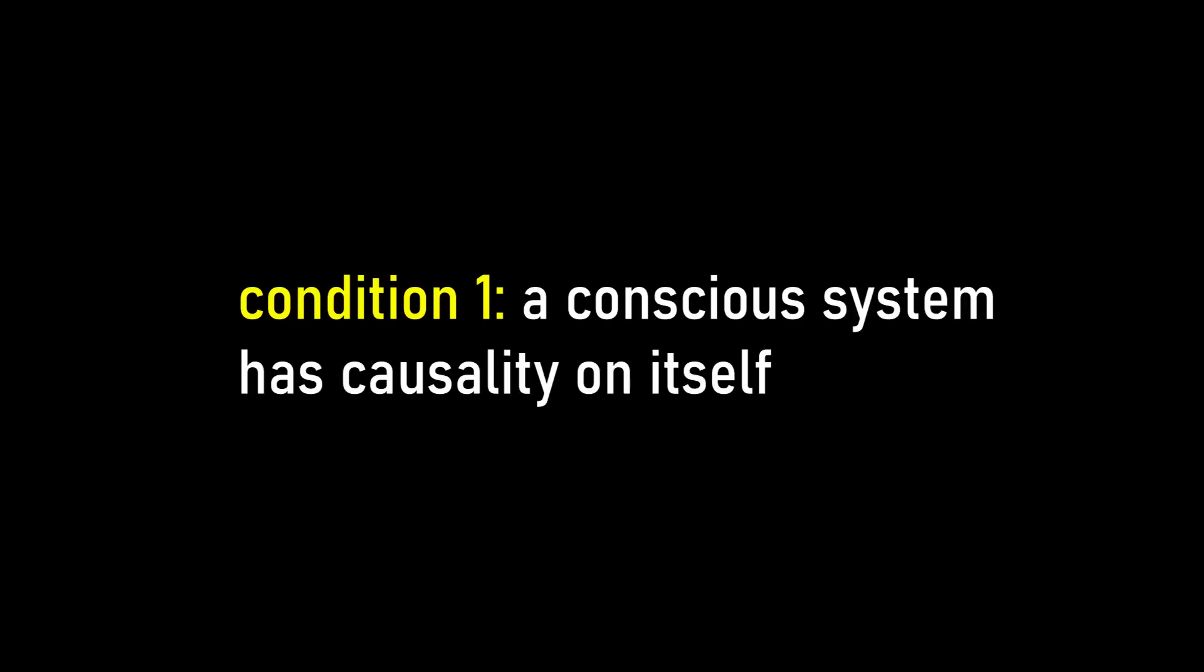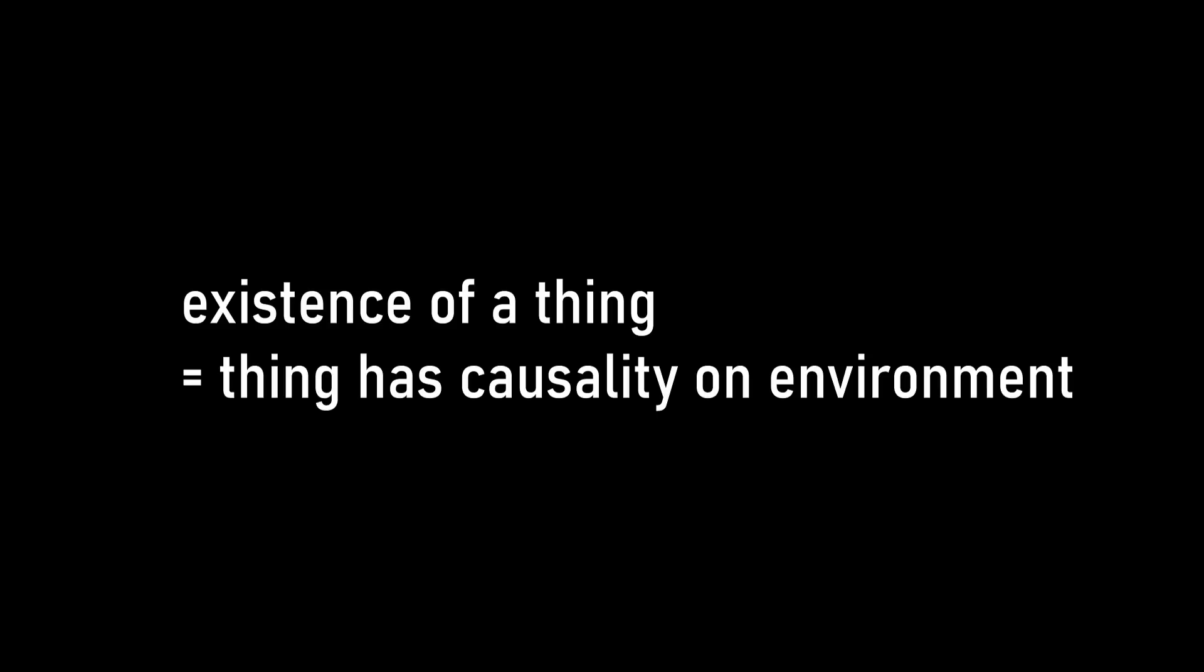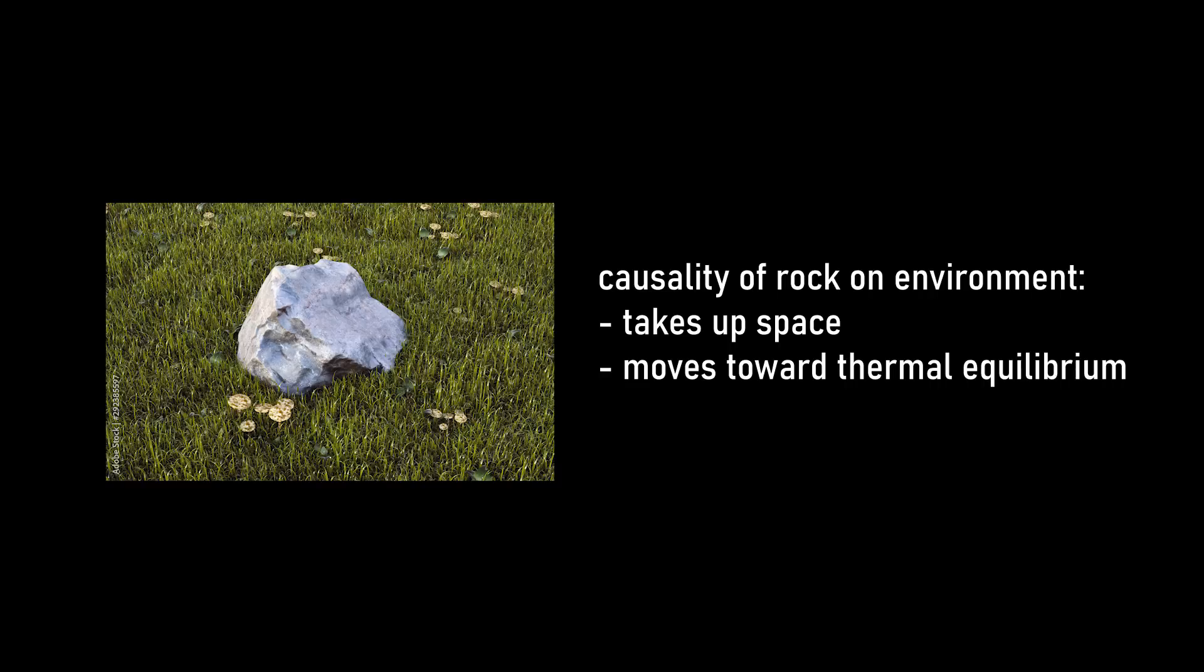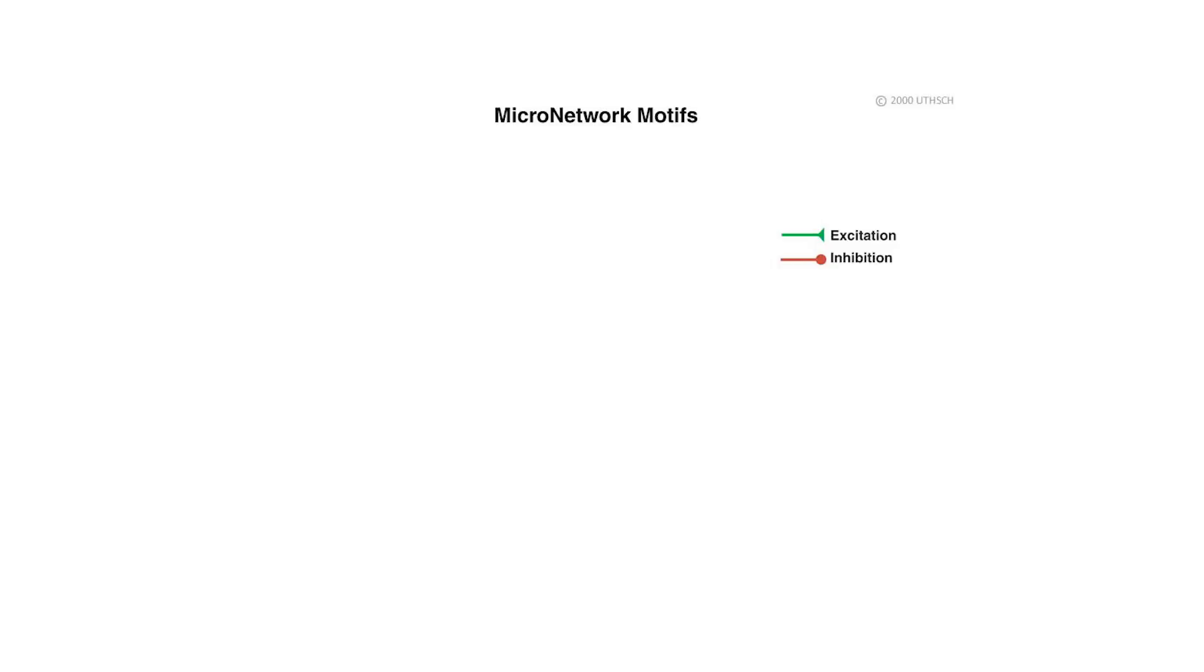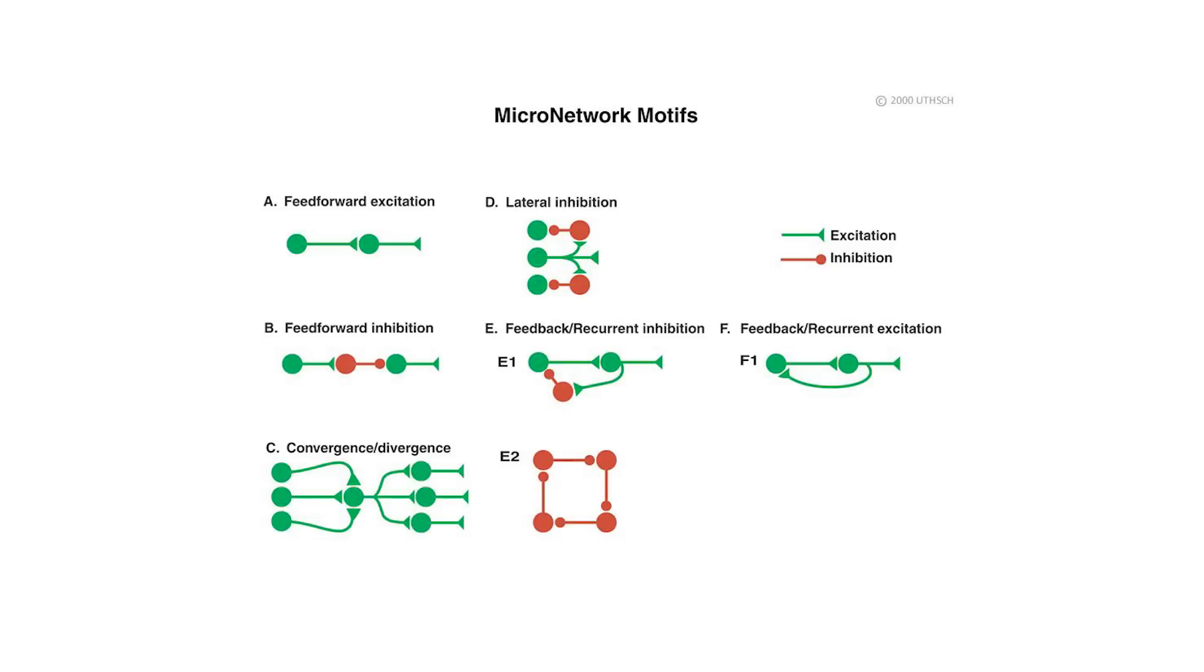Condition number one, a conscious system has causality on itself. This first assumes that the existence of some thing means that the thing has causality on its environment. So, like, the existence of a rock means that it has to take up space in its environment, move towards thermal equilibrium with its environment, have a non-zero gravitational pull, etc. Because part of being conscious is being self-aware, meaning consciousness exists from its own perspective, that means that a conscious system must have causality on itself. For example, with the way that neurons are connected in the brain, they are able to fire signals which eventually come back and influence themselves.